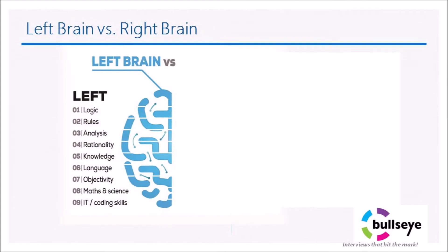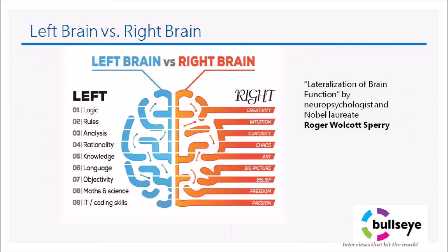Another theory divides skills into the two spheres of the brain — the left brain and the right brain. Left-brain or technical skills include topics such as logic, rules, analysis, rationality, knowledge, language, objectivity, math, science, and computer skills. Right-brain skills include creativity, intuition, curiosity, chaos, art, the big picture, belief, freedom, and passion. This is based on the publication Lateralization of Brain Function by neuropsychologist and Nobel laureate Roger Wolcott Sperry. This model divides skills into technical skills on the left side and interpersonal skills on the right side.